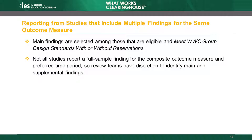These rules allow the WWC to characterize the study's findings based on the most comprehensive information available. However, not all studies will report a single finding or set of findings that reflects the full sample for the composite outcome measure and preferred time period. When applying these rules is not straightforward because of incomplete information about findings, overlapping samples, or other complications, the review team leadership has discretion to identify main and supplemental findings in a way that best balances comprehensively characterizing each study's findings and presenting them in a clear and straightforward manner.